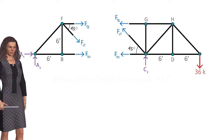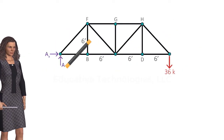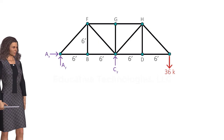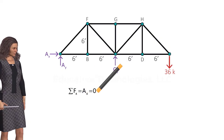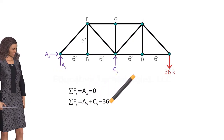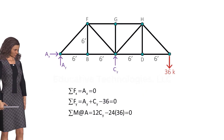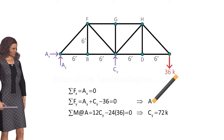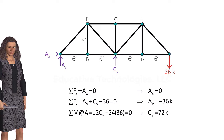Therefore, it is good practice to calculate the support reactions before splitting the truss into two parts. We can calculate the support reactions by writing the static equilibrium equations for the entire truss: the sum of forces in the x-direction equals zero, the sum of forces in the y-direction equals zero, and the sum of moments about point A equals zero. Solving these equations gives us the support reactions, and we are now ready to apply the method of sections for determining the force in member BC.